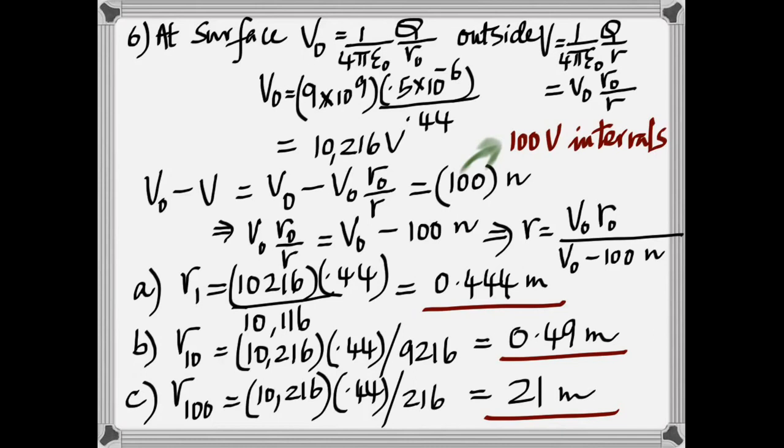at the surface, know that the potential is exactly due to that by a point charge at the center. That's true at the surface and outside. The only difference being that at the surface, you use the radius of the sphere. And outside, you use whatever distance you're looking at. And so you get V-naught.